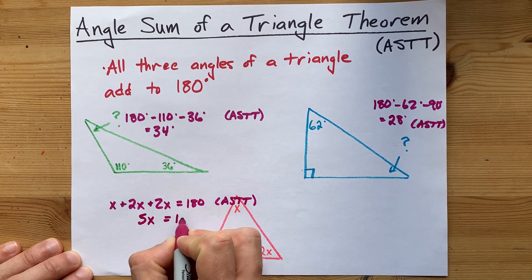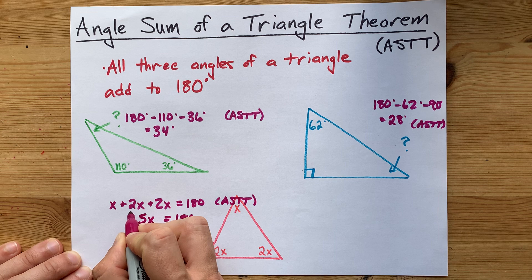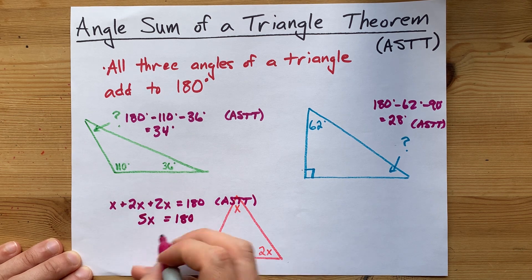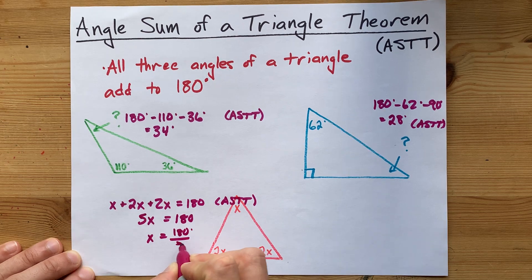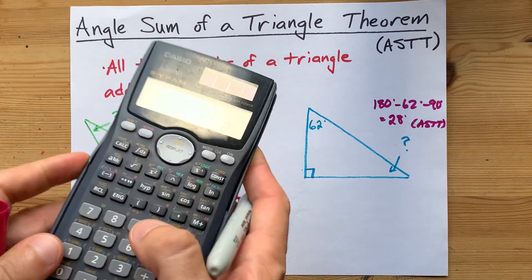This actually is 5x equals 180. 1 plus 2 plus 2 is 5. And then to actually solve for x, you can do 180 divided by 5. You're dividing out that coefficient.